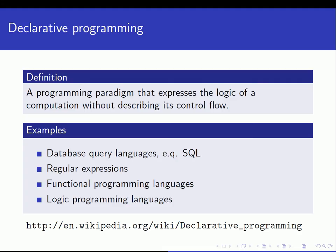If we start with discussing the concept of declarative programming — what is that? In our definition we say that declarative programming is a programming paradigm that expresses the logic of a computation without describing its control flow. To clarify this, in imperative languages like C or Pascal, and also in object-oriented languages like C++ or Java or Python, the programmer has to describe the control flow in the program as well.